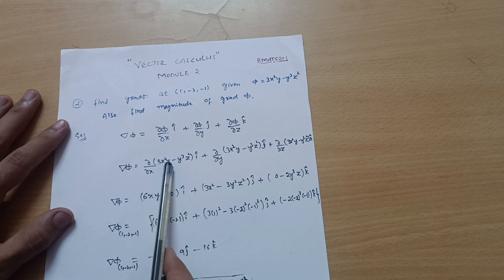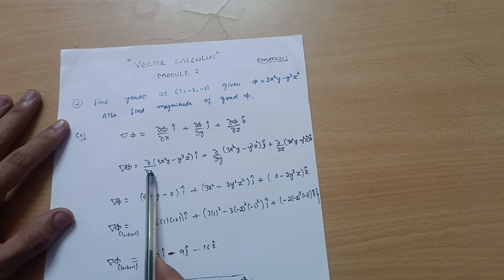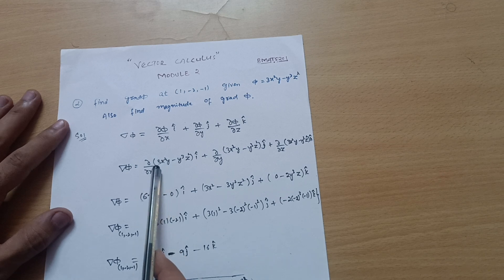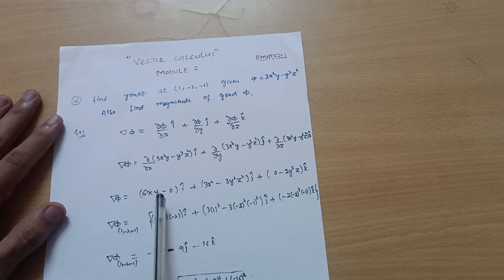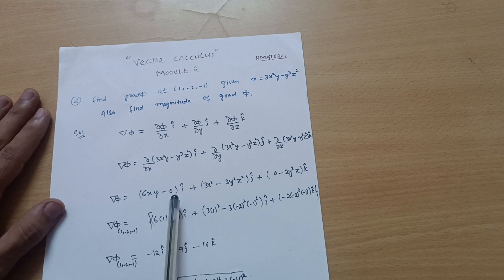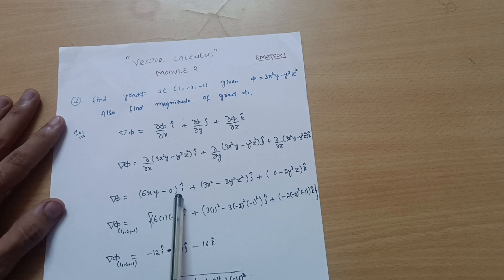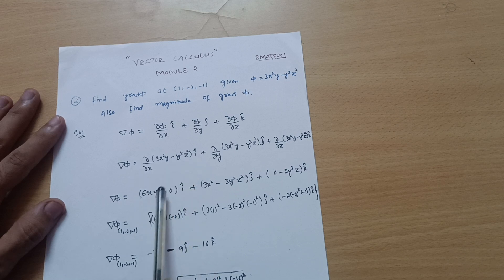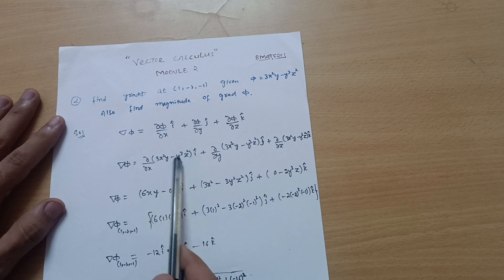For the x-component: y is treated as constant. Differentiating 3x²y with respect to x gives 6xy. For the term -y³z², there is no x present, so its derivative with respect to x is zero. Therefore the î component is 6xy.